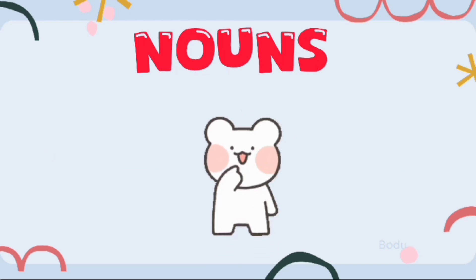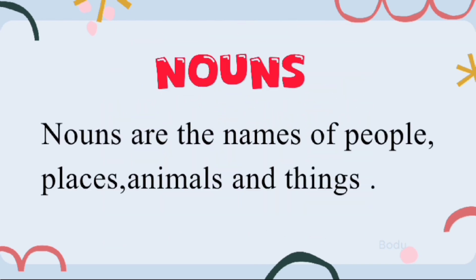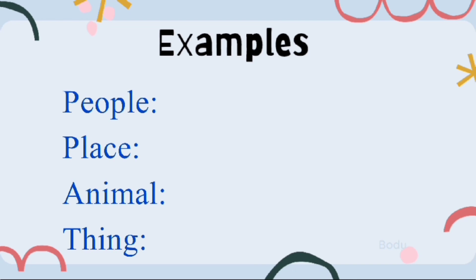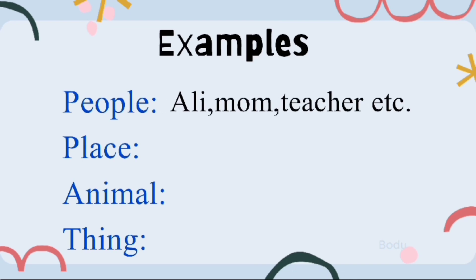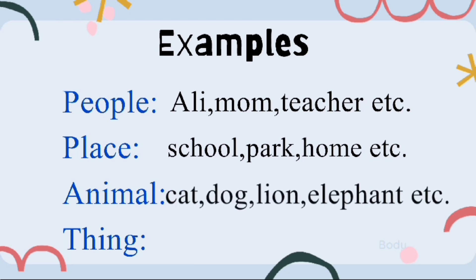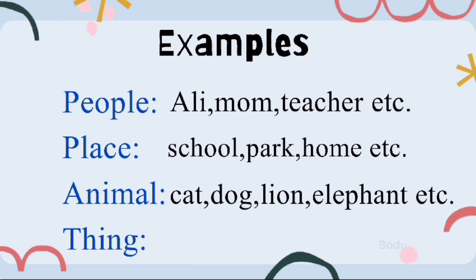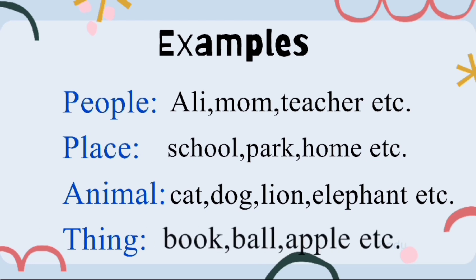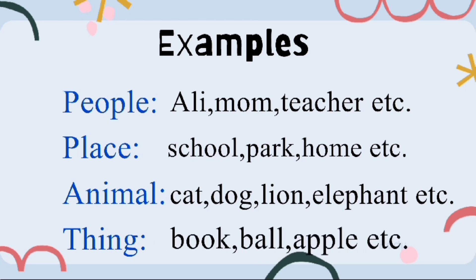Do you remember what nouns are? Let's revise it together to make sure it's clear. Nouns are the names of people, places, animals, and things. For example, Ali, mom, and teacher are people. School, park, and home are places. Cat, dog, lion, and elephant are animals. Book, ball, and apple are things.